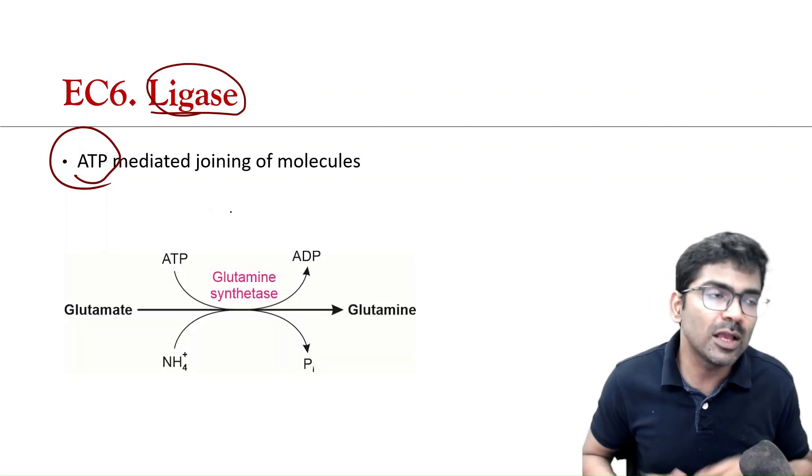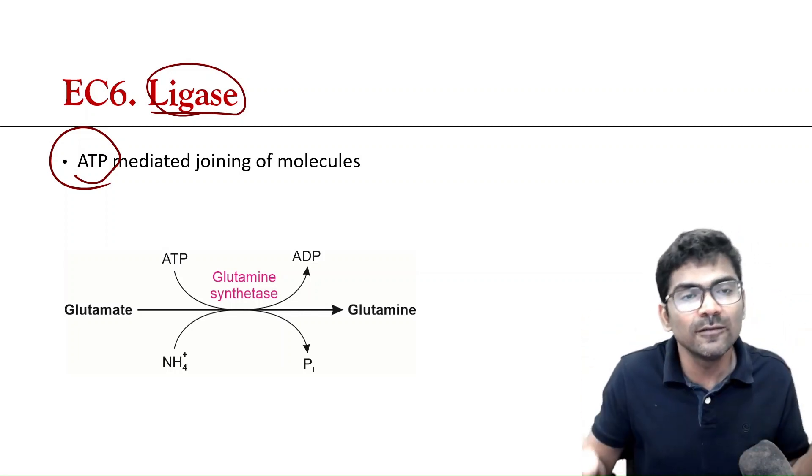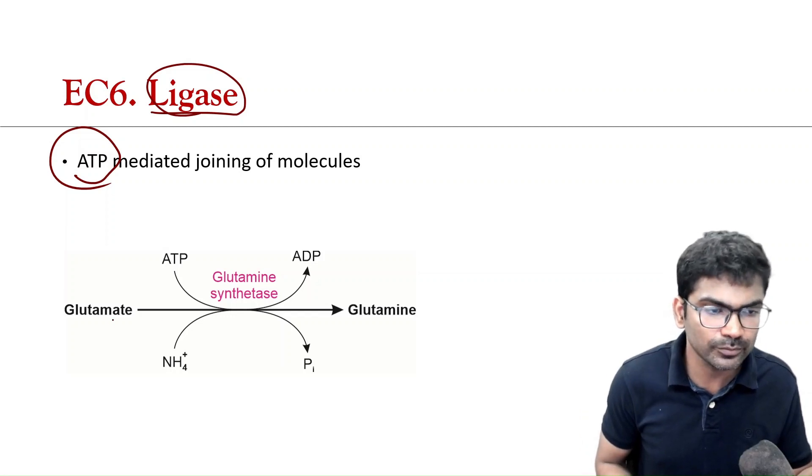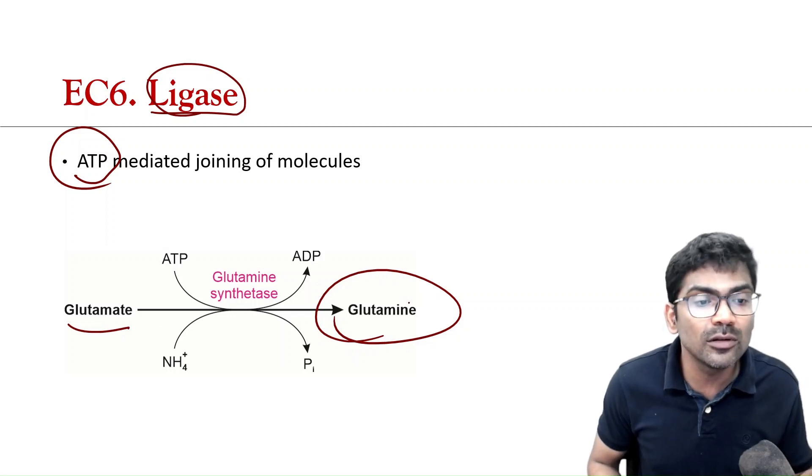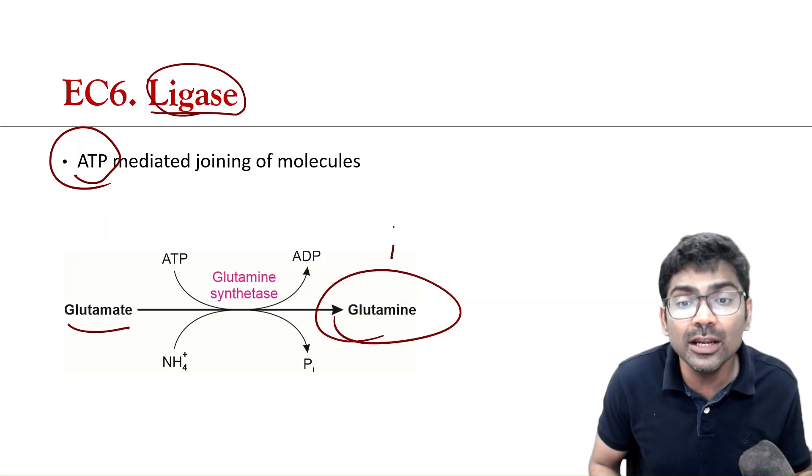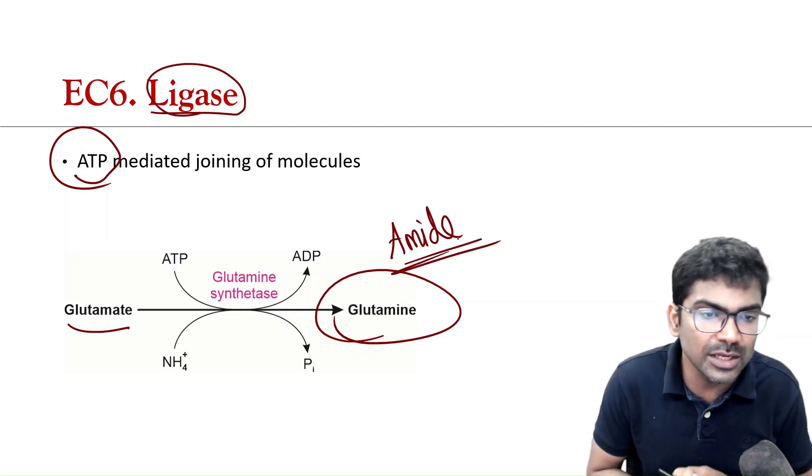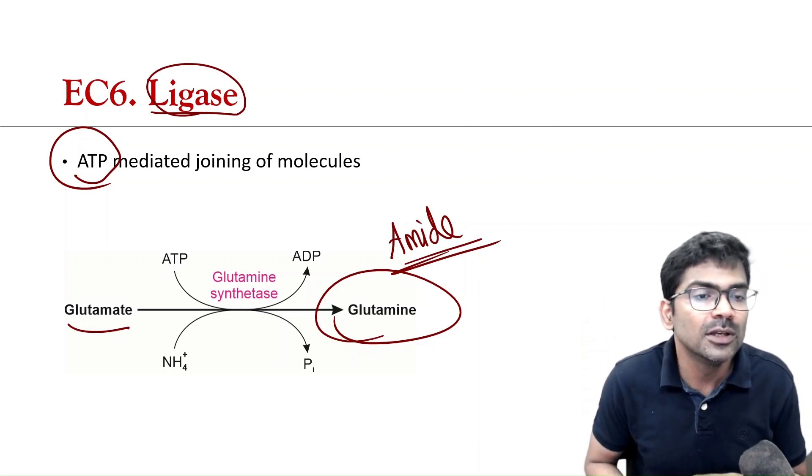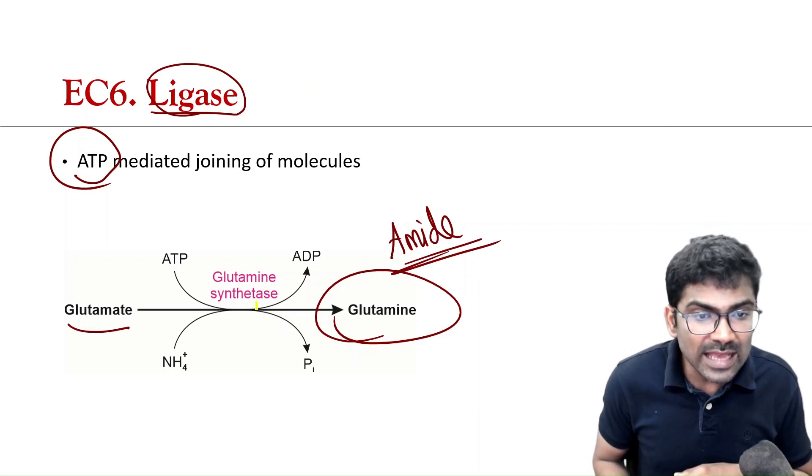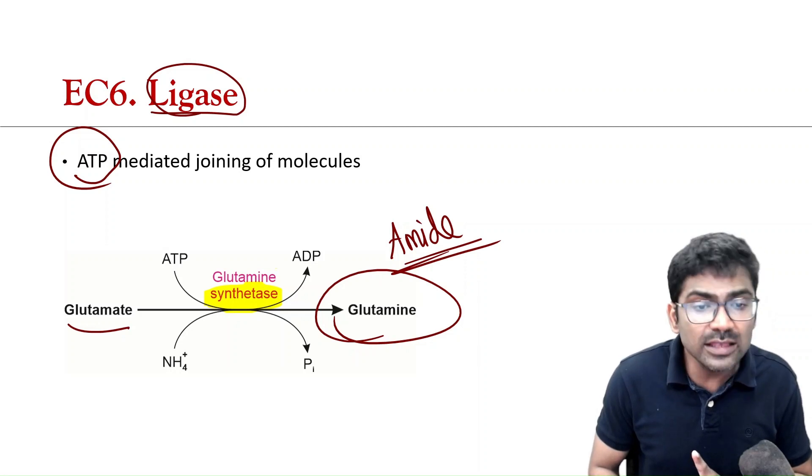So, there can be carbon-carbon bond formation. There can be carbon-nitrogen bond formation. So, glutamate is converted to glutamine. So, here, which kind of bond? So, it is amide bond. So, amide bond is being formed. So, it is carbon-nitrogen bond. Look at the name of the enzyme. So, it has T, synthetase. So, there are synthases and synthetases. You should know the difference between these two.